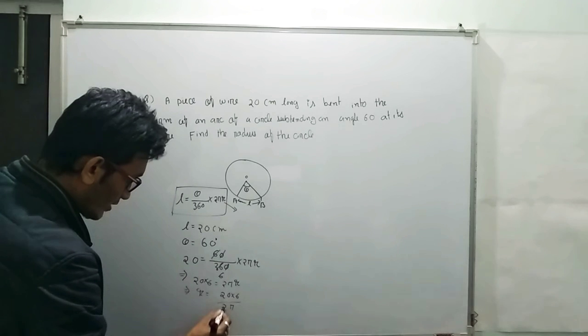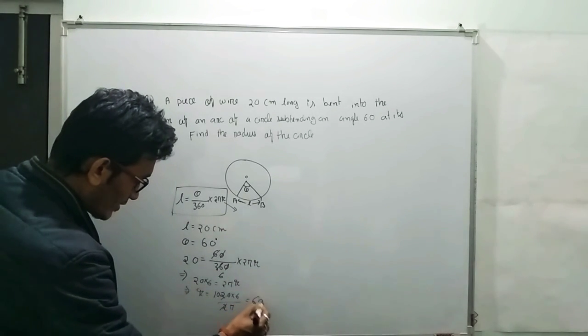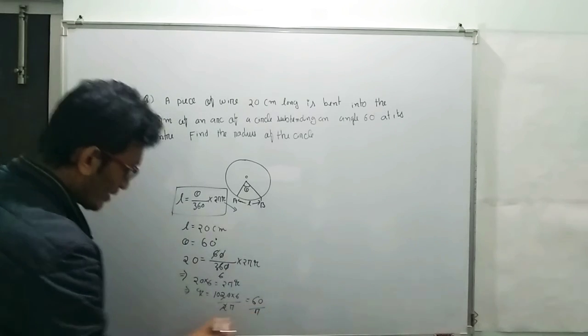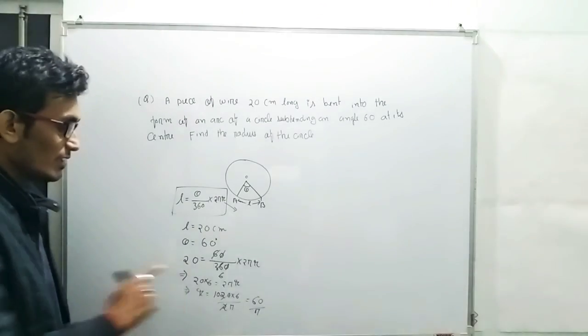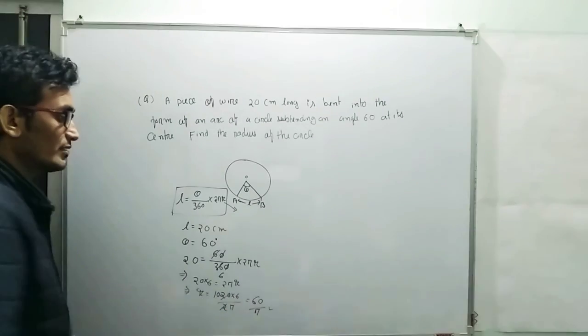2 pi, so we can cancel. So answer is 60 by pi. So what is the value of r? r is 60 by pi.